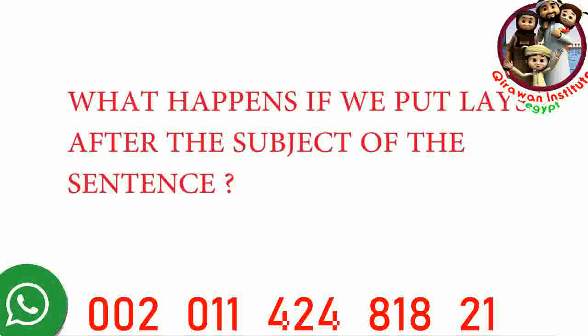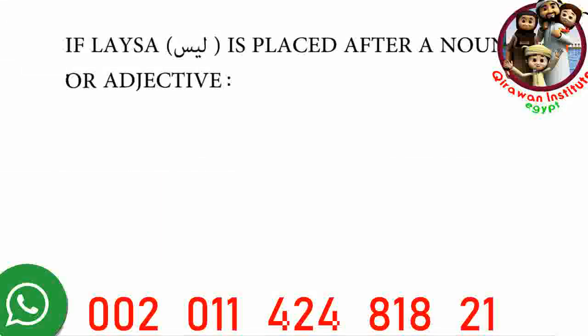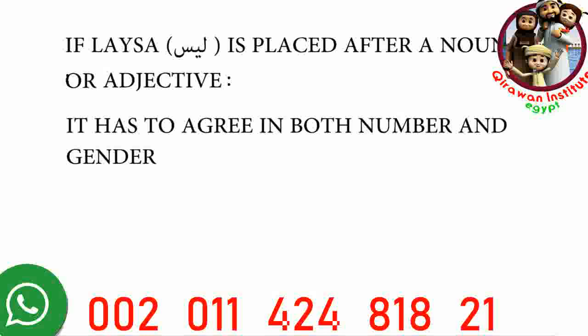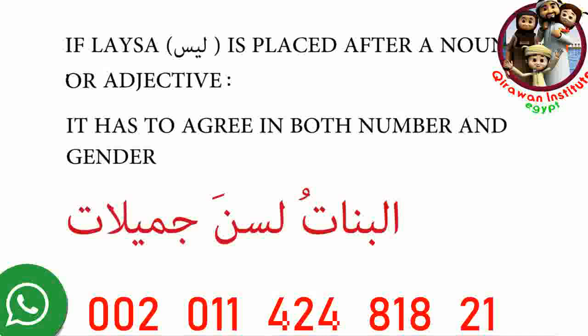Now let's examine what happens if we put leysa after the subject of the sentence. If we put leysa after a noun or adjective that's the subject of the sentence, it has to agree in both number and gender. For example, elbinatu lessna jamilatin — instead of using leysit, as we did previously, we now have to use lesna, conjugated for both feminine gender and plural number. So putting the subject first complicates the situation and requires that you know all of the forms of the conjugation.